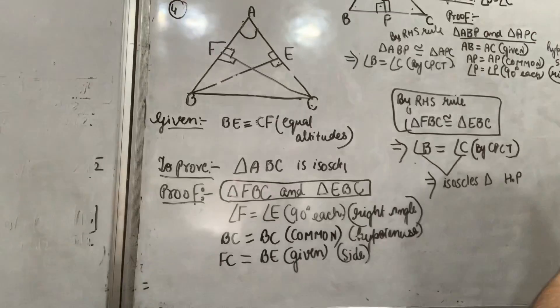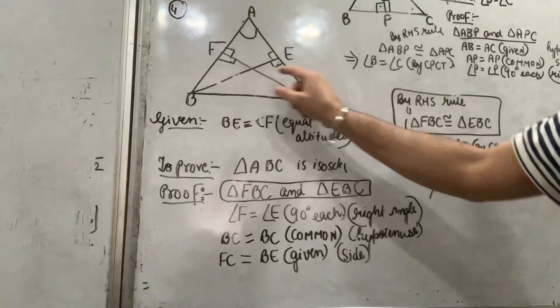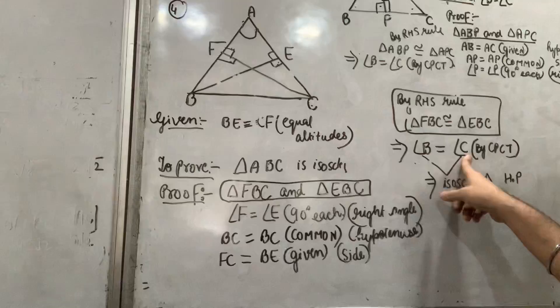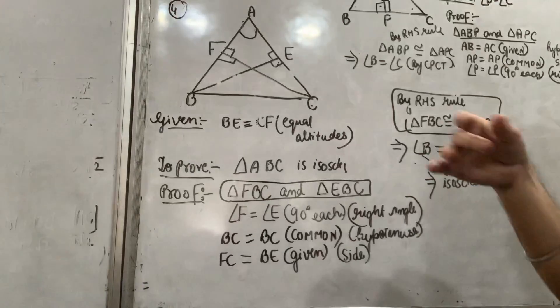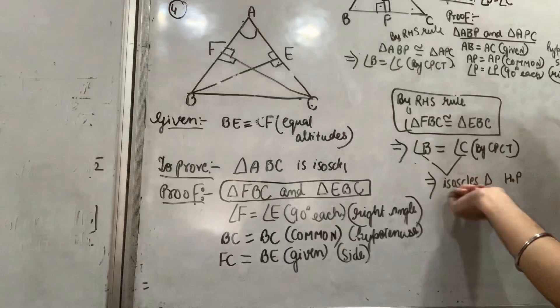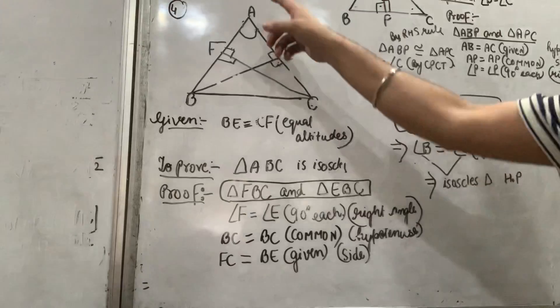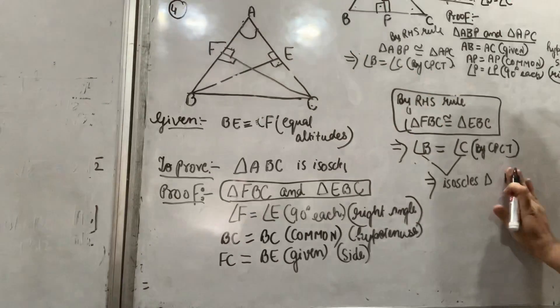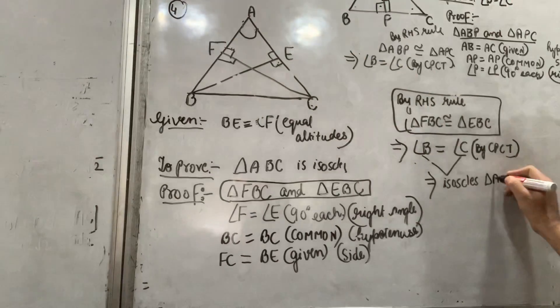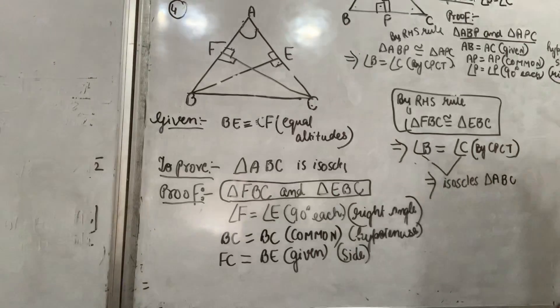So what can I say? By CPCT, angle B is equal to angle C. If B and C are equal, this implies triangle ABC is an isosceles triangle. Hence proved. That's it.